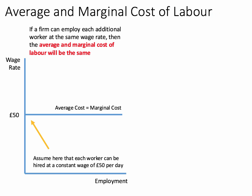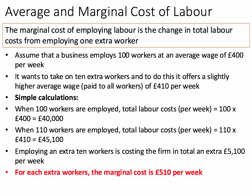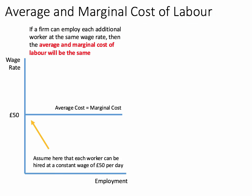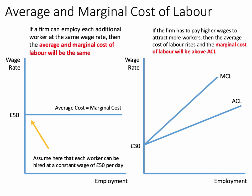But that's not quite the example we had previously. Going back to our previous example, to hire extra workers we had to bid up the wage from £400 per week to £410. So rather than hiring workers at the same wage, it's more realistic to say that to hire extra workers we have to bid up the average wage, and that increases the marginal cost. So if the firm has to pay higher wages to attract more workers, the average cost of labour goes up and, crucially, the marginal cost of labour will lie above the average cost of labour.